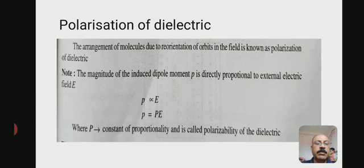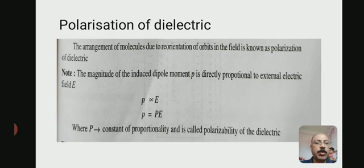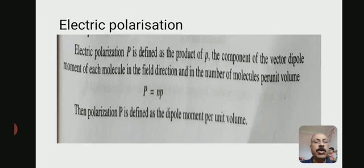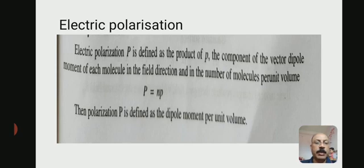Now, polarization of dielectric. The arrangement of molecules due to reorientation in the field is known as polarization of dielectric. The magnitude of the induced dipole moment p is directly proportional to the external electric field E, that is p ∝ E. Removing the proportionality symbol and introducing a constant α (polarizability), p = αE, where α is called the polarizability of the dielectric. Electric polarization P is defined as the product of the dipole moment p of each molecule in the field direction and the number of molecules N per unit volume. That is P = Np. The polarization P is defined as the dipole moment per unit volume.